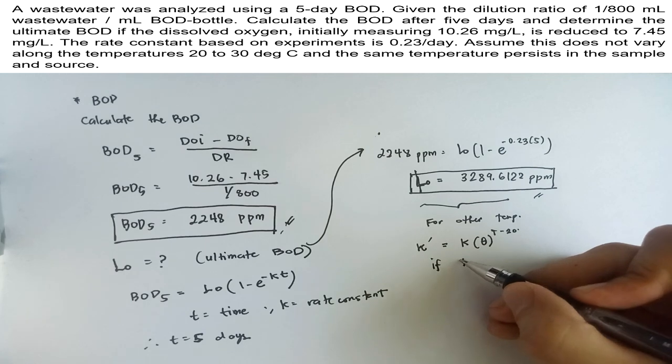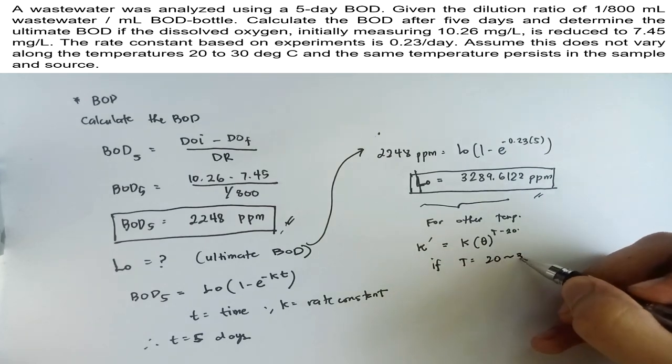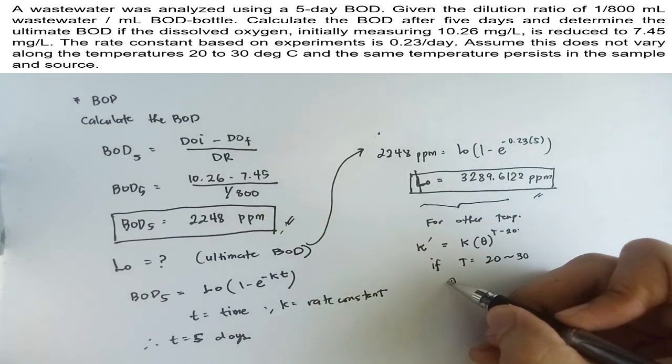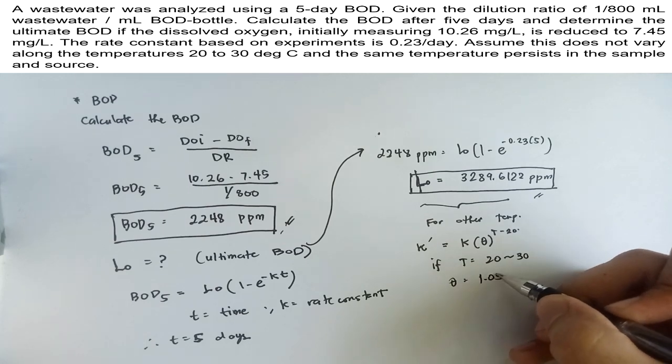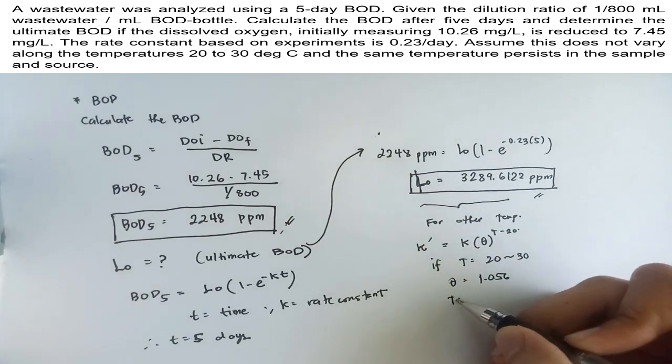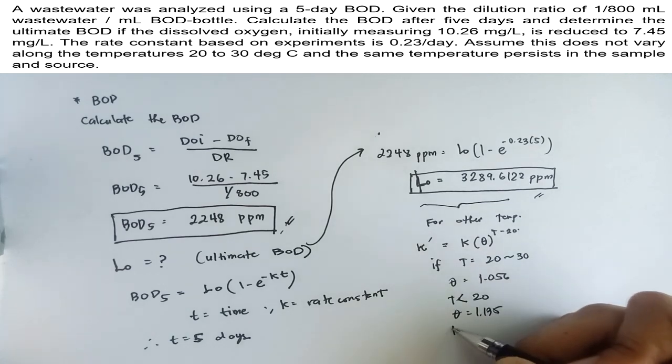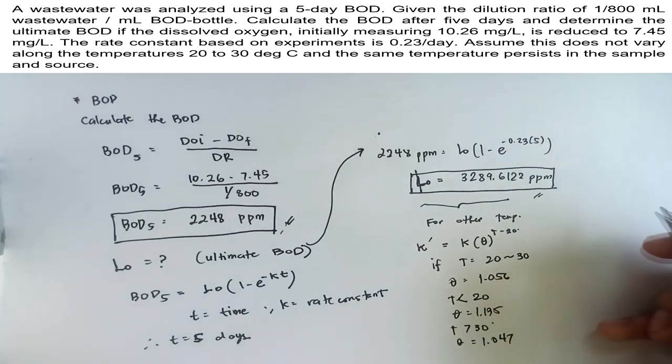Theta varies depending on the temperature range. If we have 20 degrees Celsius to 30 degrees Celsius, then theta is equal to 1.056. If we're below 20 degrees Celsius, then theta is equal to 1.135. And if we're above 30 degrees Celsius, then theta is equal to 1.047.